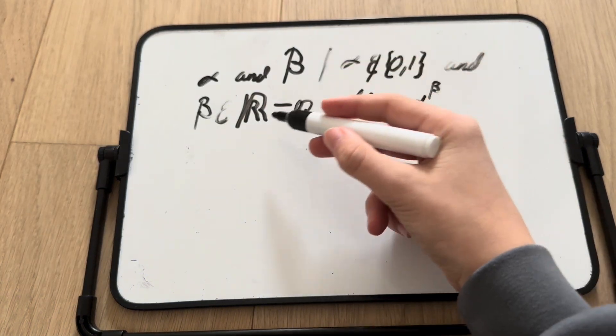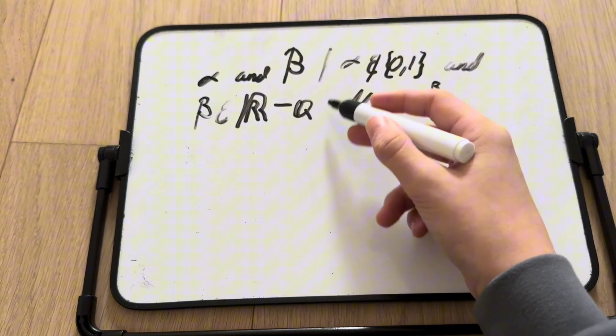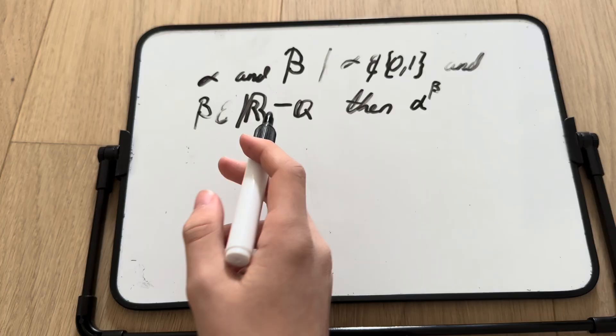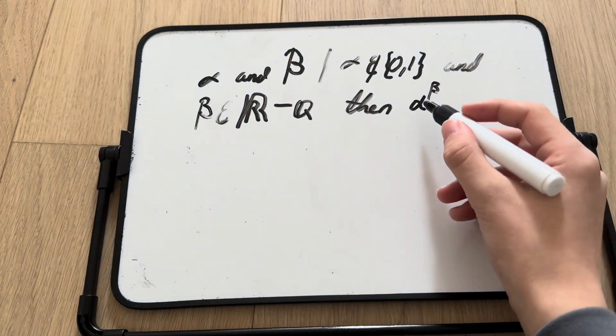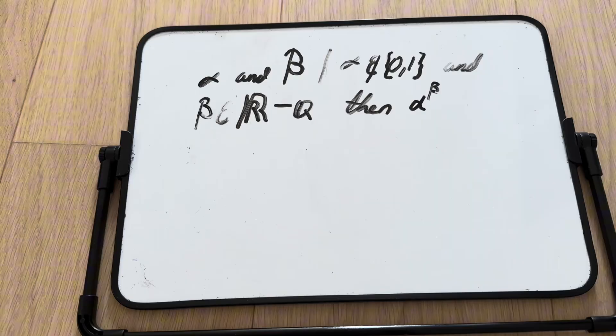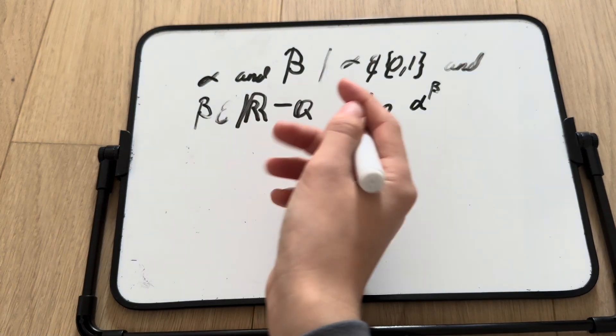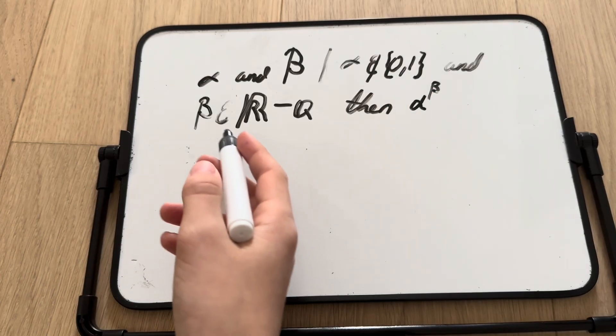and b is a real number subtract integers, which means it's, sorry, subtract rational numbers, which means it's irrational, then a to the b is transcendental. And well, i is not equal to 0 or 1.